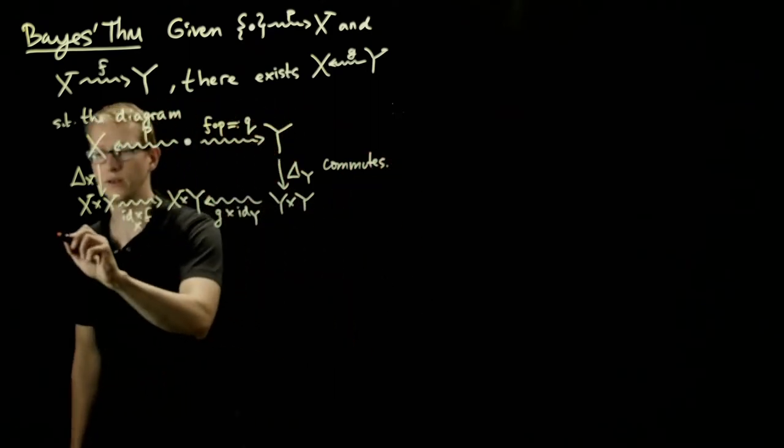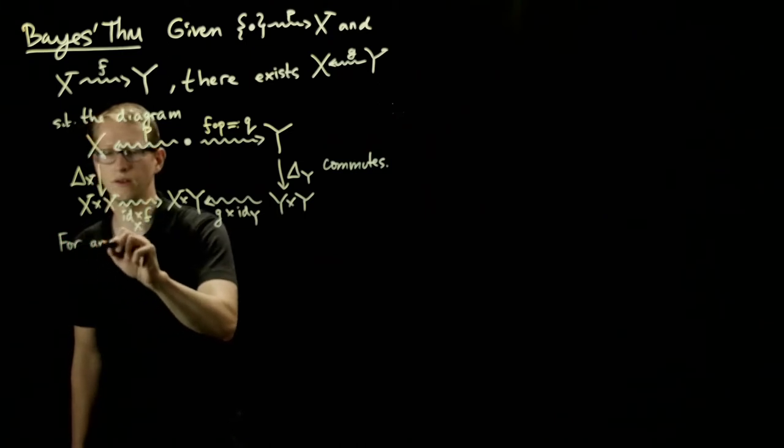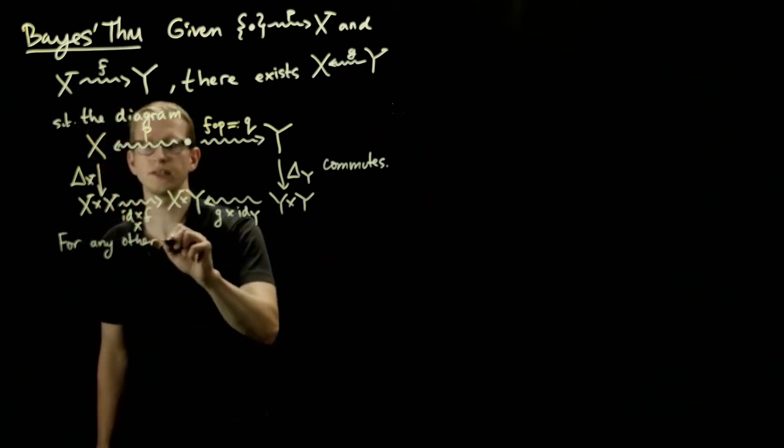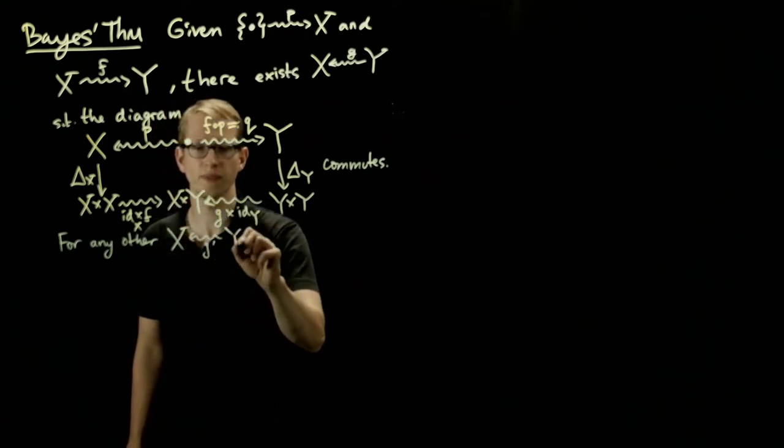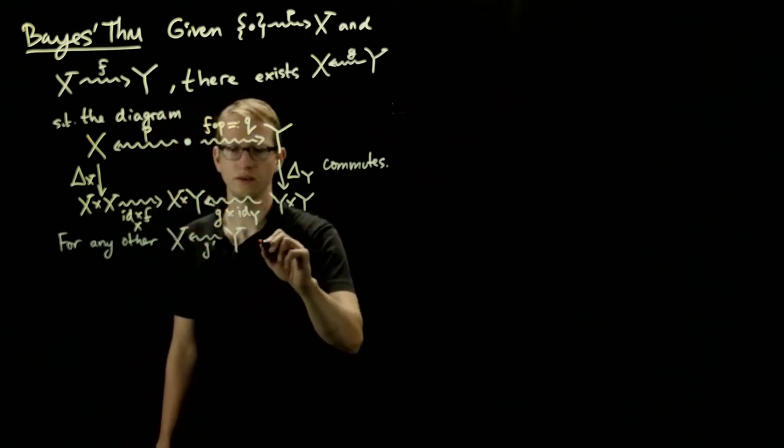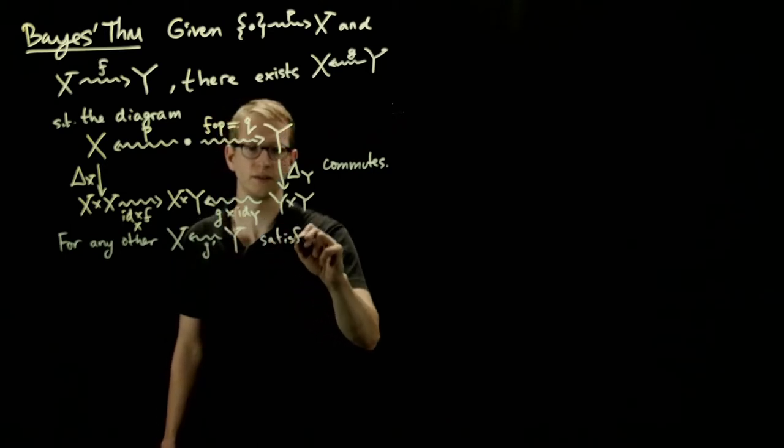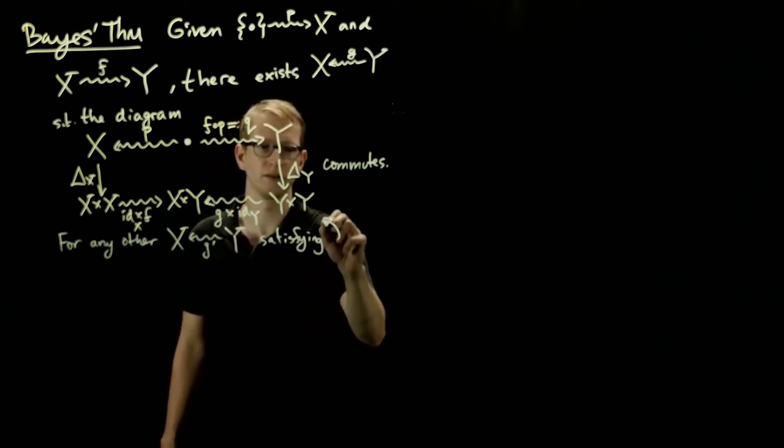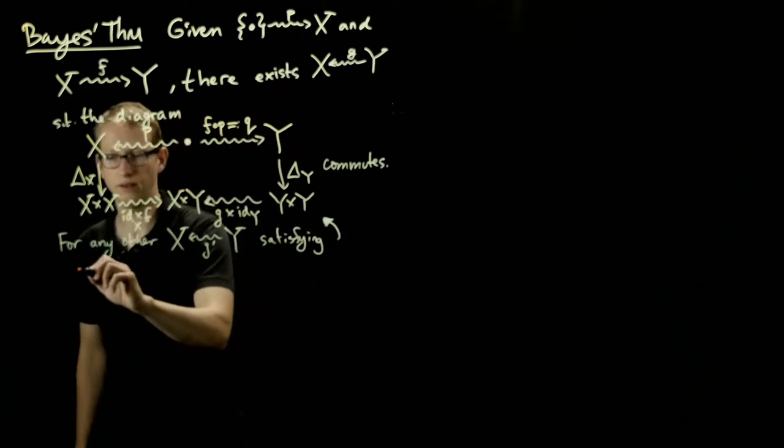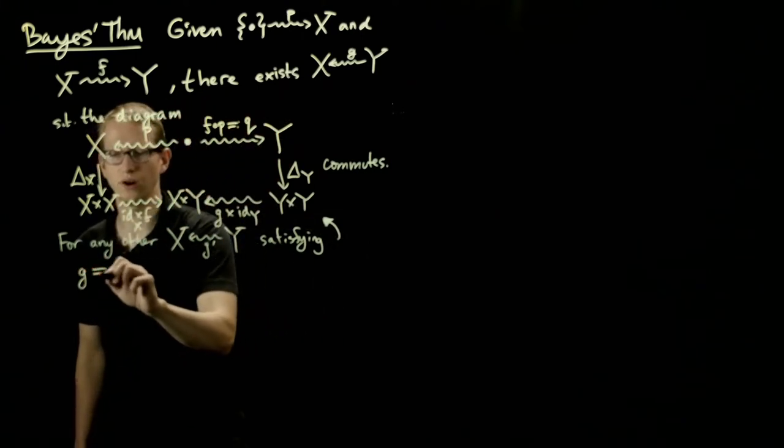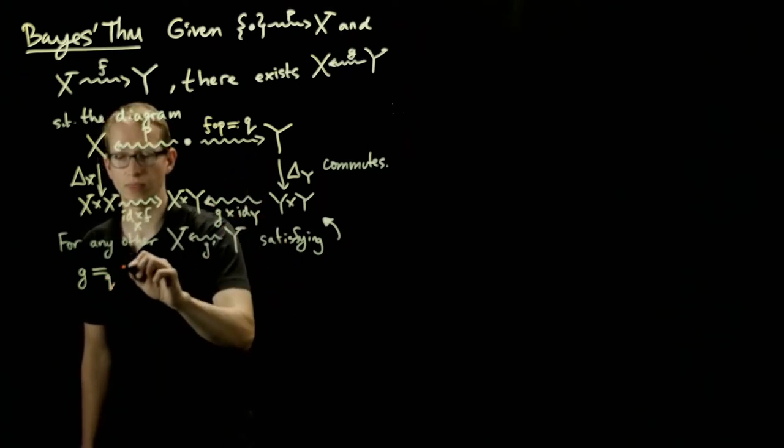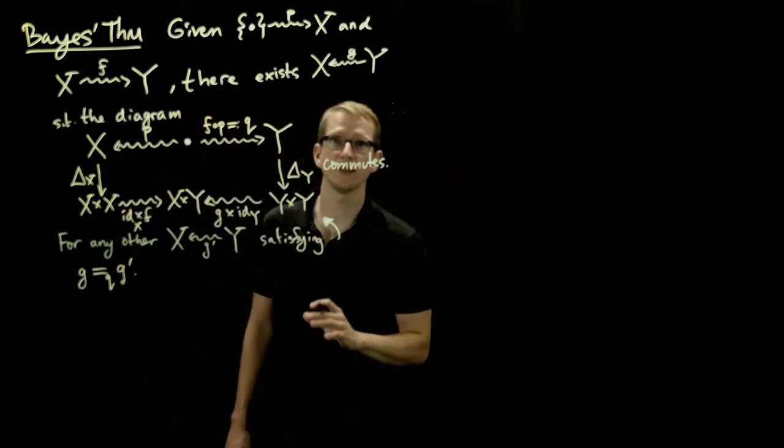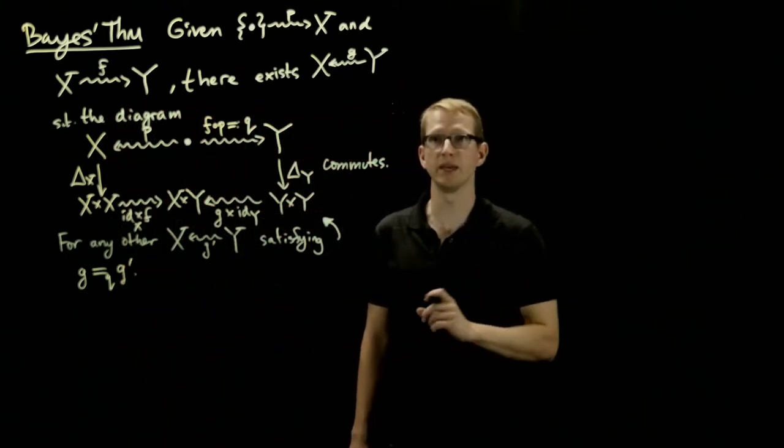And furthermore, for any other stochastic map that also goes in the opposite direction, let's call it g prime, satisfying this, then these two maps are almost everywhere equivalent in the sense of our probability q. So this is the formal statement of Bayes' theorem.